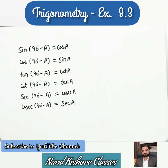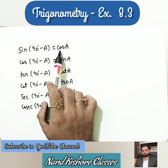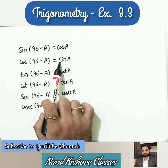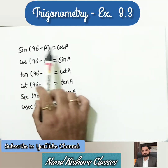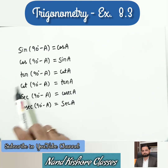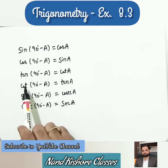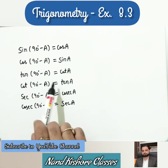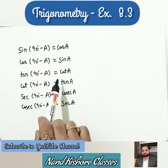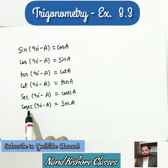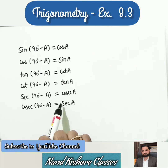Look at these formulas very carefully. Sin is being converted to cos and cos is being converted to sin — sin and cos can be remembered together. Tangent is converted to cotangent and cotangent is converted to tangent. Same way, secant and cosecant are converted to each other.